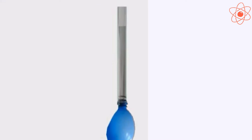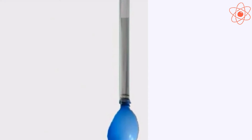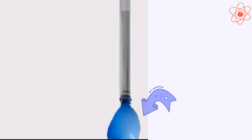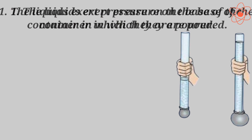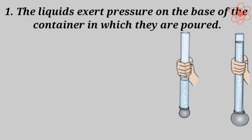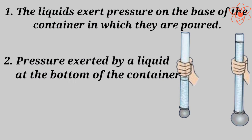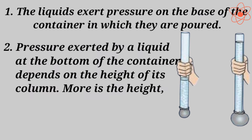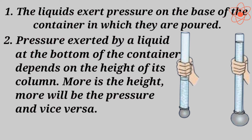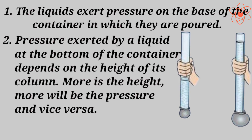Now pour some more water into the tube so that the height of the water column increases. You will see that the size of the bulge increases. This activity shows that first, liquids exert pressure on the base of the container in which they are poured. And second, pressure exerted by a liquid at the bottom of the container depends on the height of the column — more is the height, more will be the pressure, and vice versa.